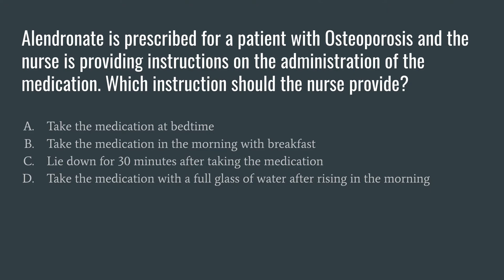Picking out our keywords: alendronate is prescribed for a patient with osteoporosis. We know that alendronate is a bisphosphonate used in the treatment of osteoporosis, and we are looking at the administration of the medication. A side effect — or adverse effect — of bisphosphonates can be esophagitis or esophageal ulcers.